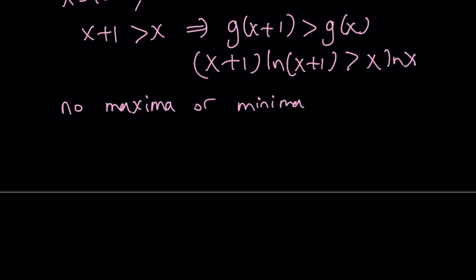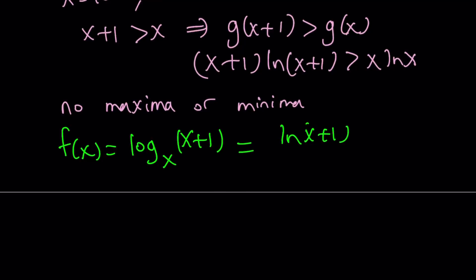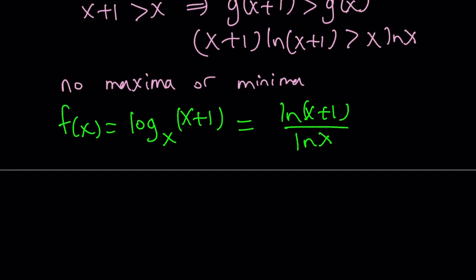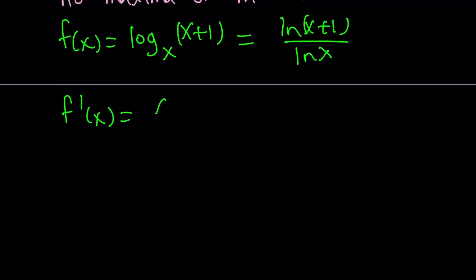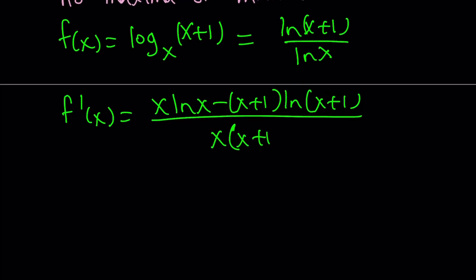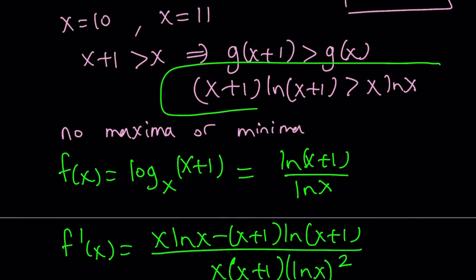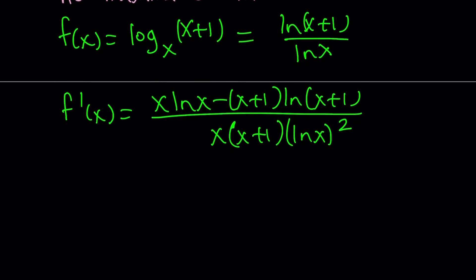So let's go back to f. Remember f(x) was defined as log(x+1) with base x, or written as ln(x+1)/ln(x). That's where we got g from by differentiating. Since there is no maxima or minima, looking at f'(x) — which is x·ln(x) minus (x+1)·ln(x+1), divided by x(x+1)·(ln x)² — we know that x·ln(x) is always less than (x+1)·ln(x+1). Therefore we have a negative numerator, and the denominator is always positive because of the square. So f'(x) is always negative, meaning f(x) is always decreasing.